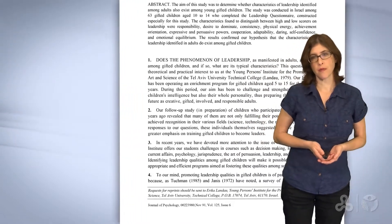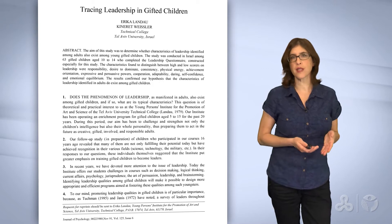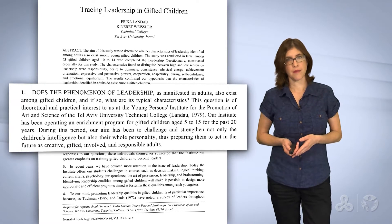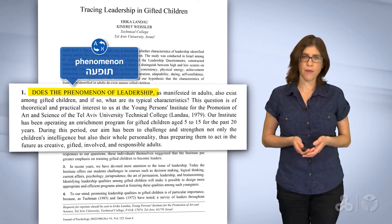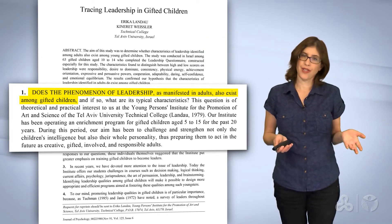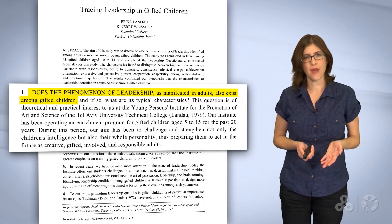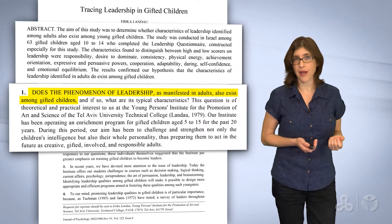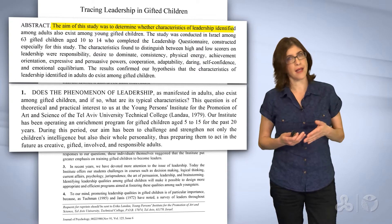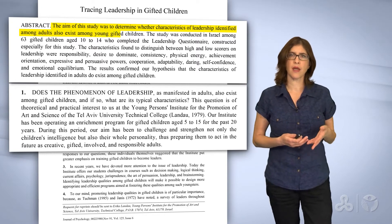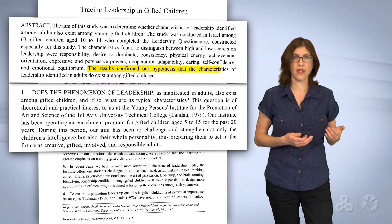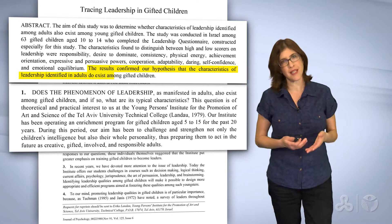Let's look at the introduction. We will skim this section first by reading the first sentence to get an idea of how the writer begins this section. Let's zoom in on the first sentence: 'Does the phenomenon of leadership, as manifested in adults, also exist among gifted children?' This is a question — it sounds like the research question, the hypothesis and purpose that we saw in the abstract. The aim of the study was to determine whether characteristics of leadership identified among adults also exist among young gifted children, and the results confirmed that hypothesis.